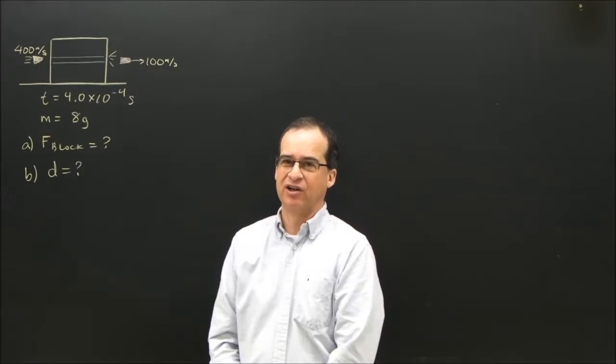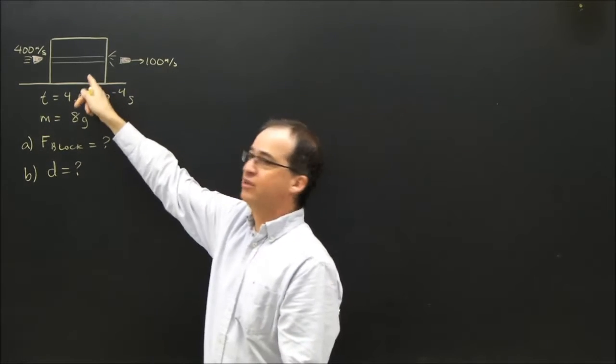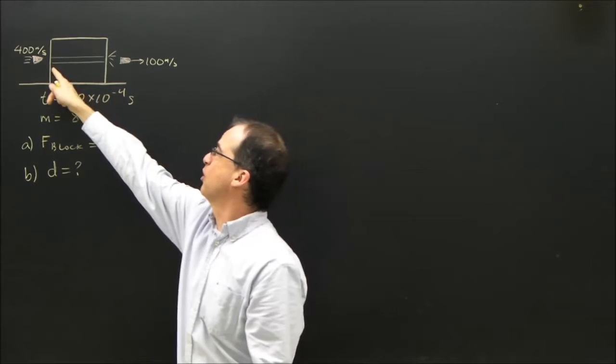Let's do a little more difficult Newton's Second Law question. So I've got a block of wood attached to a table. A bullet is traveling 400 meters per second. It enters the block of wood,